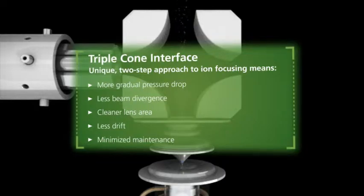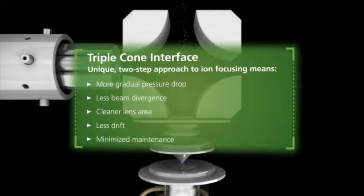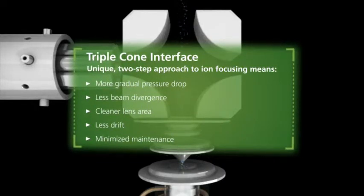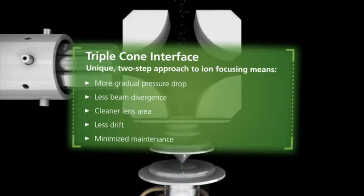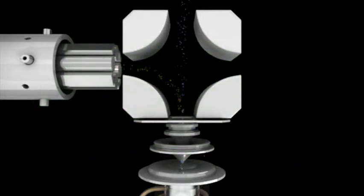Together, the triple cone interface and quadrupole ion deflector eliminate the need for routine operator maintenance inside the vacuum chamber, and prevent the universal cell from ever requiring cleaning or replacement.